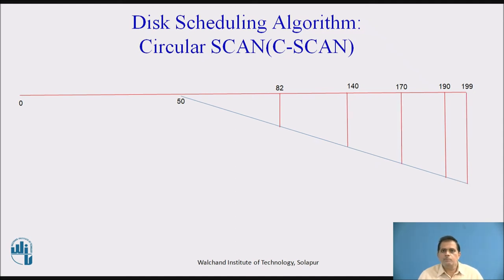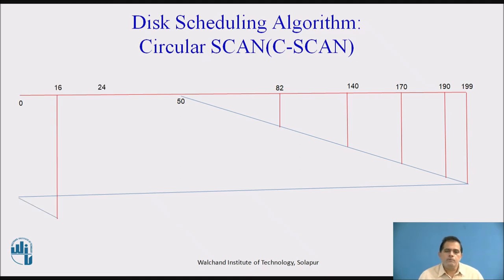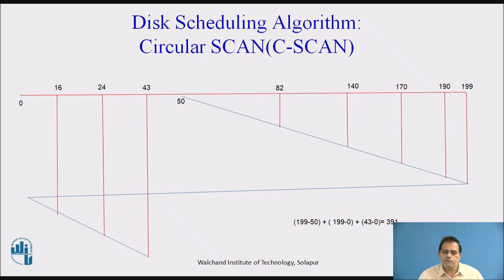In circular scan, we move until the end of the track at 199. From 199, the head moves directly to 0. Because in the algorithm, when moving to the left-hand side, we go directly to the start of the track, that is 0. From 0, we move again to the right-hand side. The first value less than our previous position is 16, so we move from 0 to 16. Then from 16 to 24, and from 24 to 43, servicing those requests.